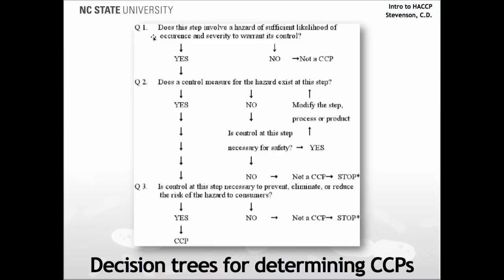We start with the first question: does this step involve a hazard of sufficient likelihood of occurrence and severity to warrant its control? If the answer to this question is no, then it is not a critical control point. However, if the answer is yes, we proceed to question 2. Question 2 asks: does a control measure for the hazard exist at this step? We answer this question and the decision tree helps us determine whether we need a critical control point at this step. If the answer is yes, we go ahead to question number 3 and so on.